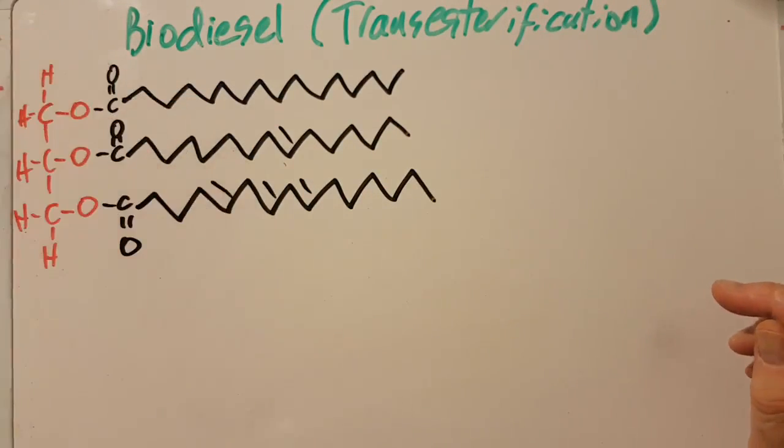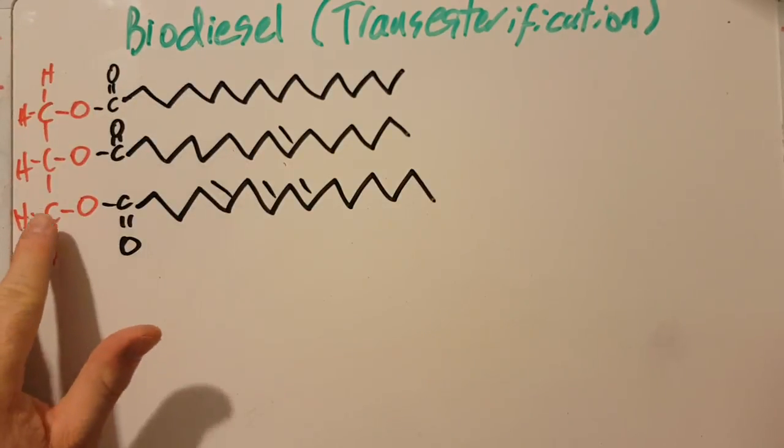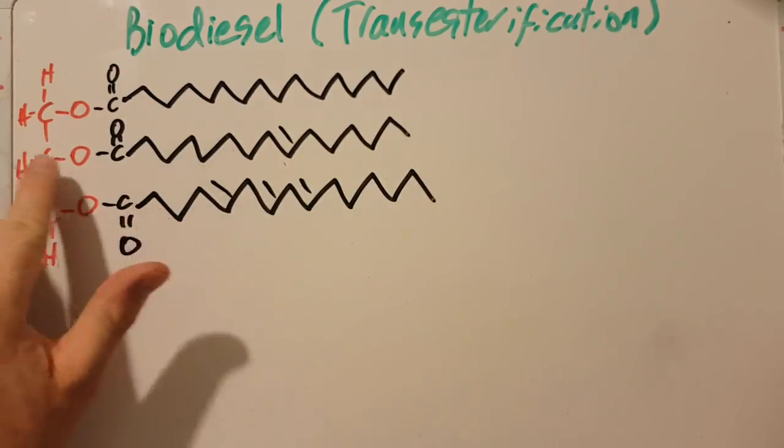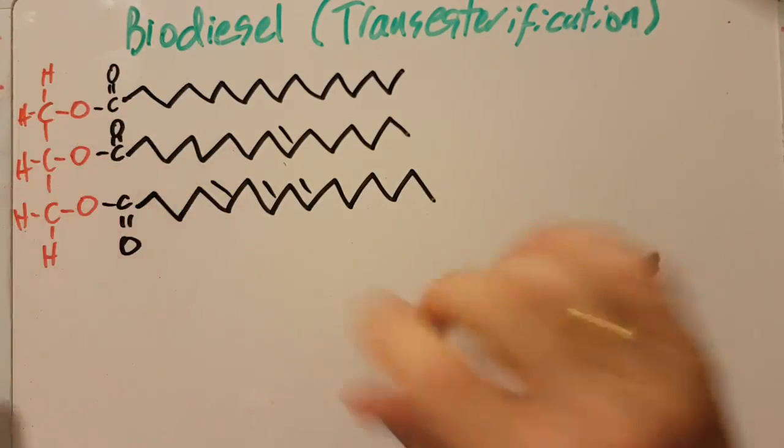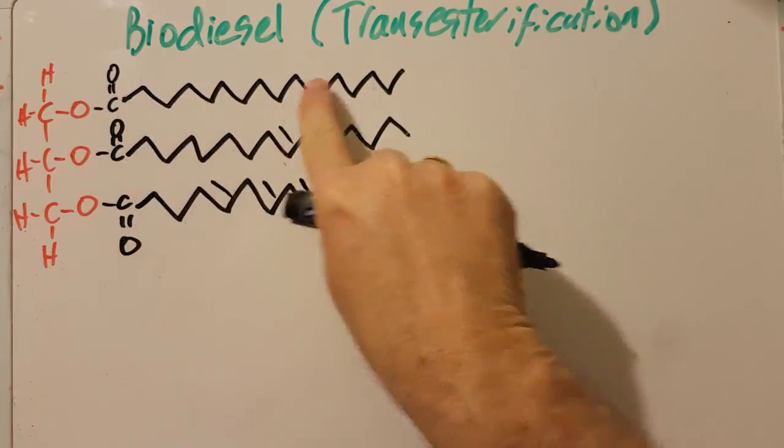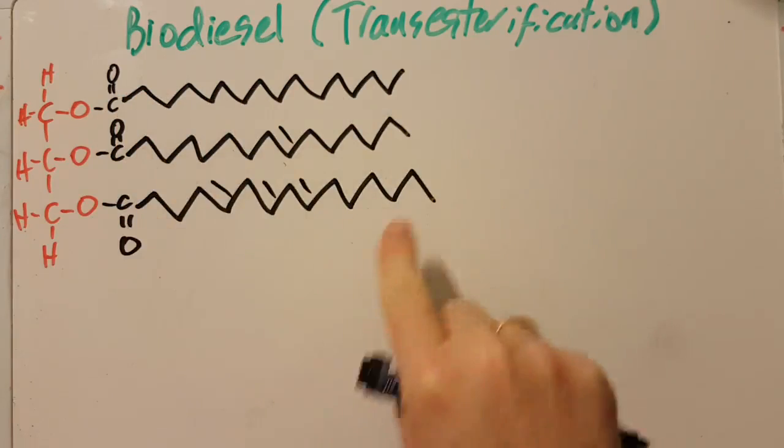And we're going to use the process of trans-esterification. So this is a triglyceride, or triester, if you will, same thing. There's the ester linkage there, three times. And this is a large hydrocarbon chain, but they're slightly different.